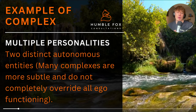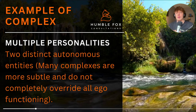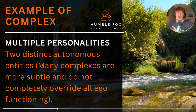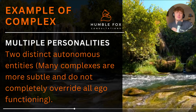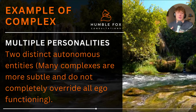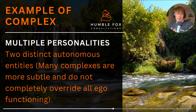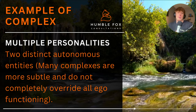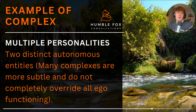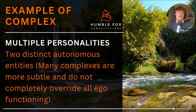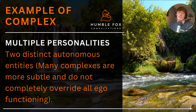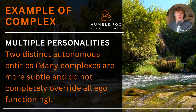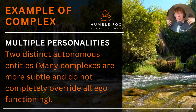A really powerful example of a complex is multiple personalities — when somebody literally has access to two different personalities within themselves, and sometimes these personalities don't even have information about each other. This is how complexes can be viewed: they are literally separate autonomous entities that exist inside the psyche. Many complexes are more subtle and do not completely override ego functioning, however they absolutely can. With multiple personalities, an entire person existing inside somebody's psyche literally overrides consciousness, and the other personality may have no awareness of what occurred.